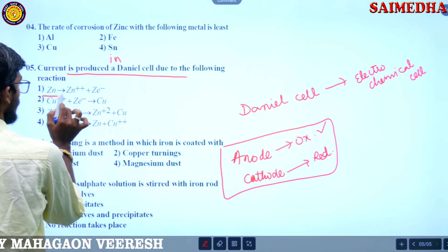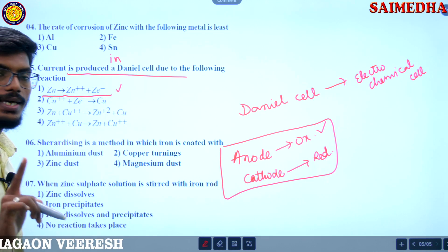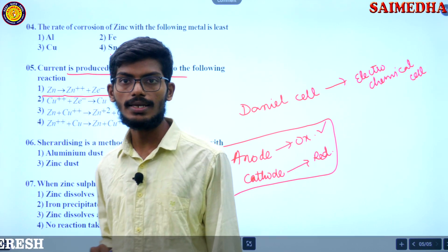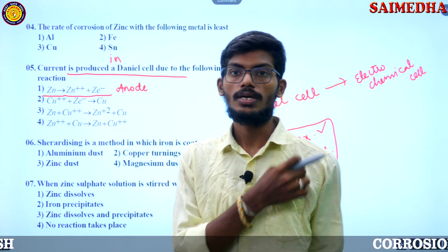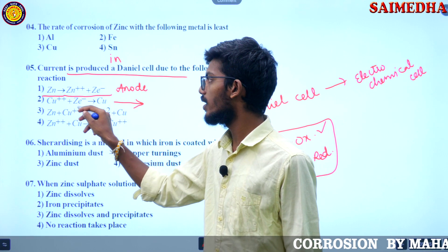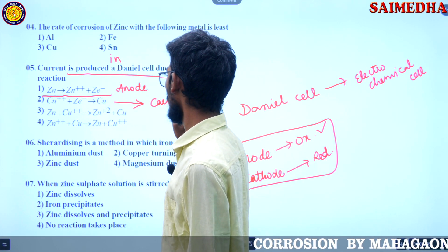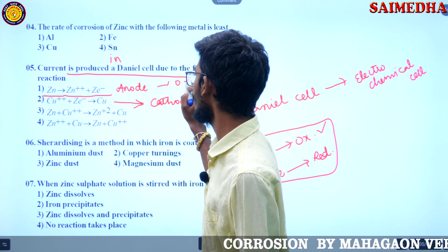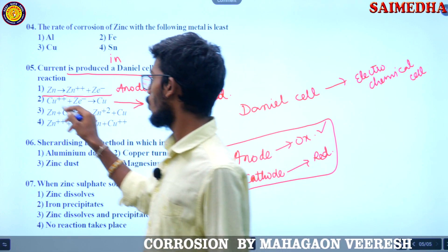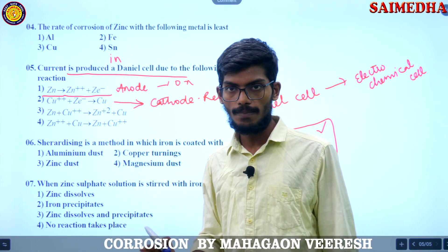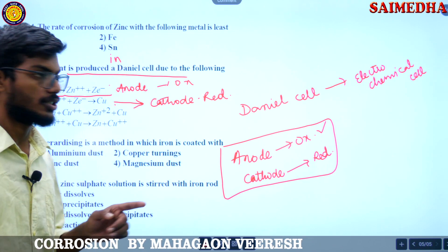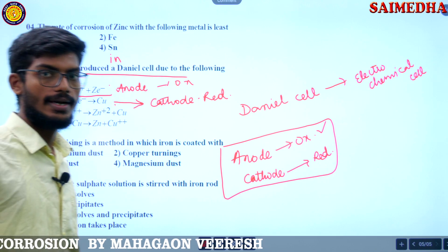Here, zinc is acting as anode. But only the anode reaction is not enough to produce current. We definitely require two types — anode and cathode reactions. If these are combined together, then we can get the current.